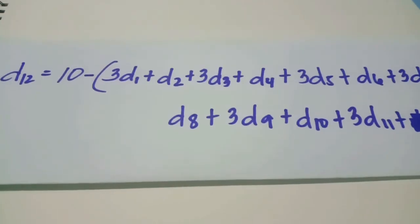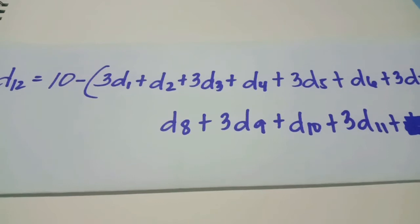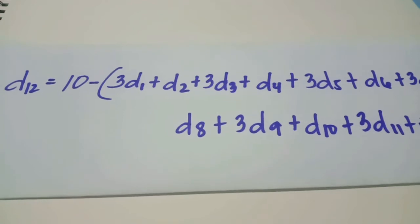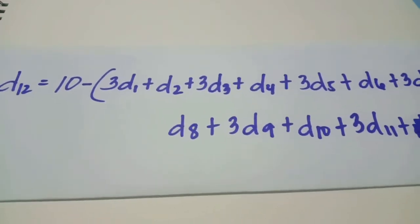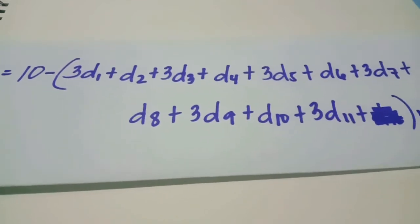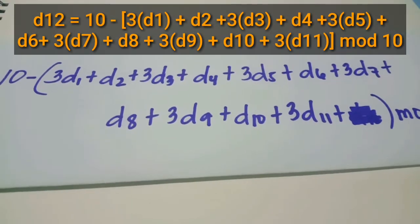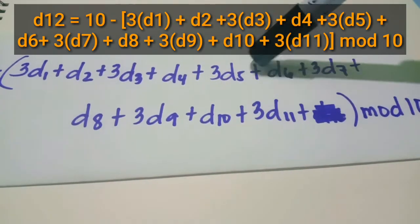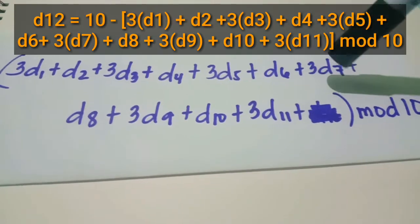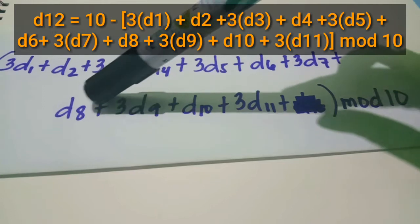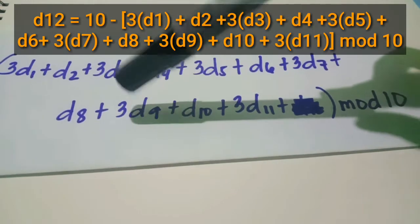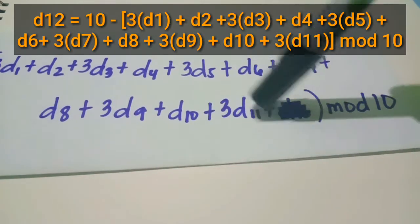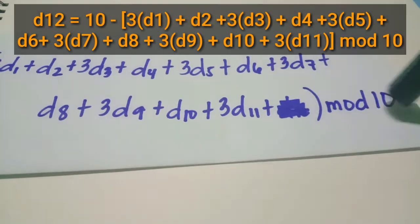Like ISBN, the UPC or Universal Product Code satisfies this equation. The check digit D sub 12 is equal to 10 minus 3 times D sub 1 plus D sub 2 plus 3 times D sub 3 plus D sub 4 plus 3 times D sub 5 plus D sub 6 plus 3 times D sub 7 plus D sub 8 plus 3 times D sub 9 plus D sub 10 plus 3 times D sub 11, modulo 10 or mod 10.